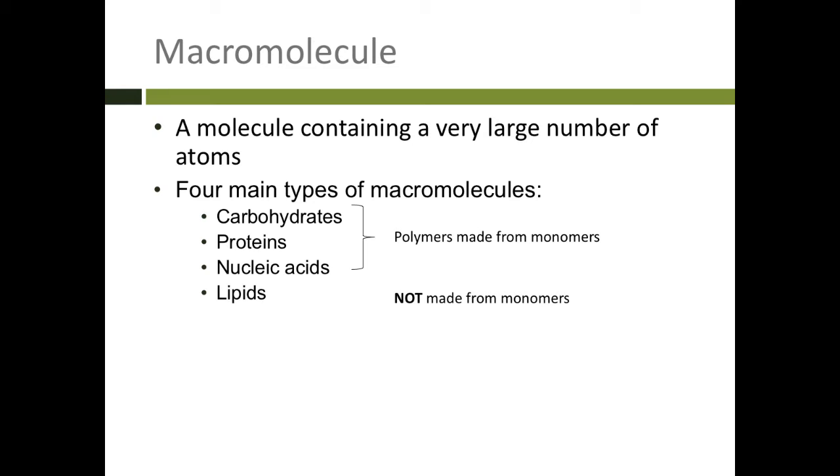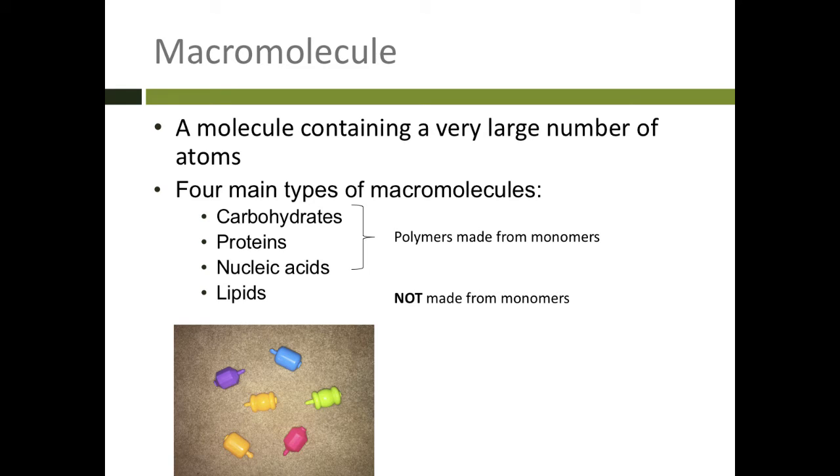Carbohydrates, proteins, nucleic acids, and lipids. Three of these four are polymers. What's a polymer? Polymers are made from monomers.